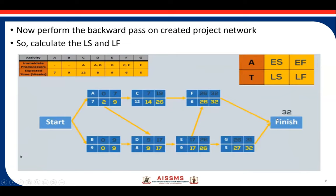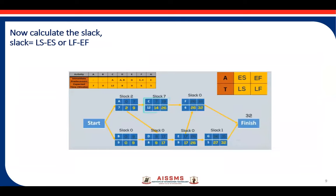Now we have the forward pass and backward pass values. The next step is to calculate the slack. Slack, also called float, is calculated using the formula: late start minus early start, or late finish minus early finish. For activity A, late start minus early start is 2 minus 0, and late finish minus early finish is 9 minus 7, giving a slack value of 2.